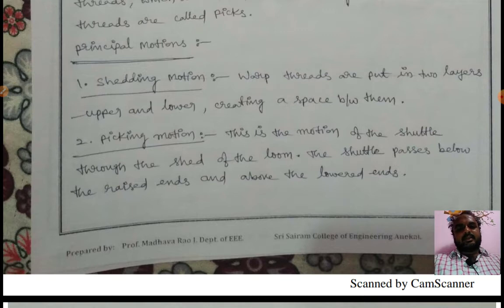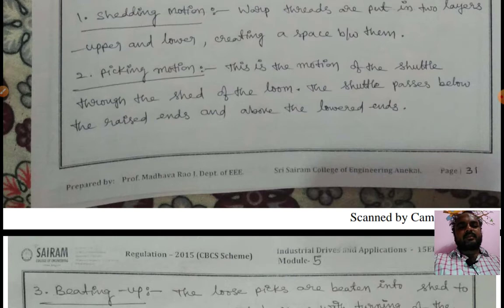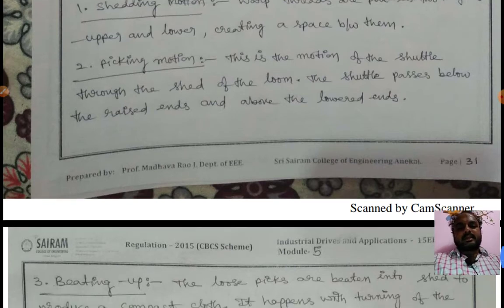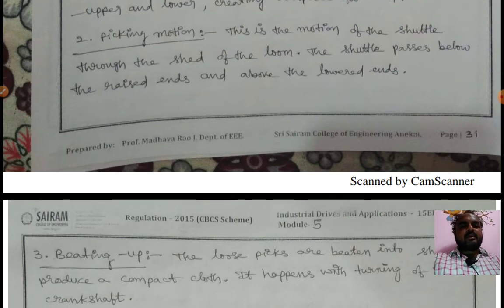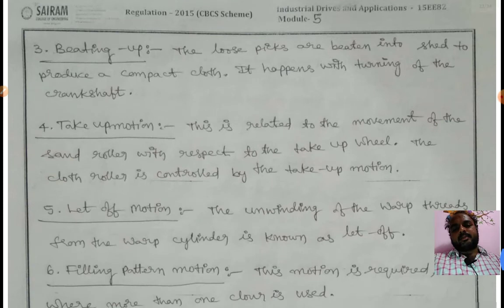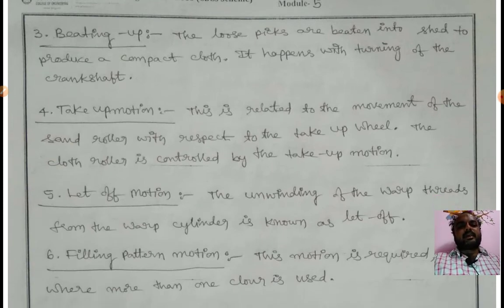Shedding motion: the warp threads are put into two layers, upper and lower. Picking motion: the motion of the shuttle through the shed of the loom. The shuttle passes below the raised ends and above the lowered ends. Beating up: the loose picks are beaten into the shed to produce compact cloth.